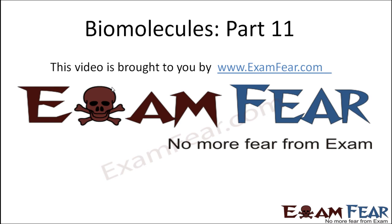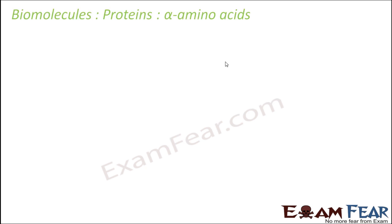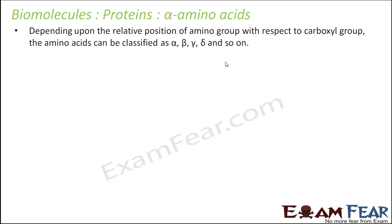Hello friends. This video on biomolecules part 11 is brought to you by examfio.com. Proteins can be of different types. They can be alpha amino acids, beta amino acids, or gamma amino acids. Let us see what they are.